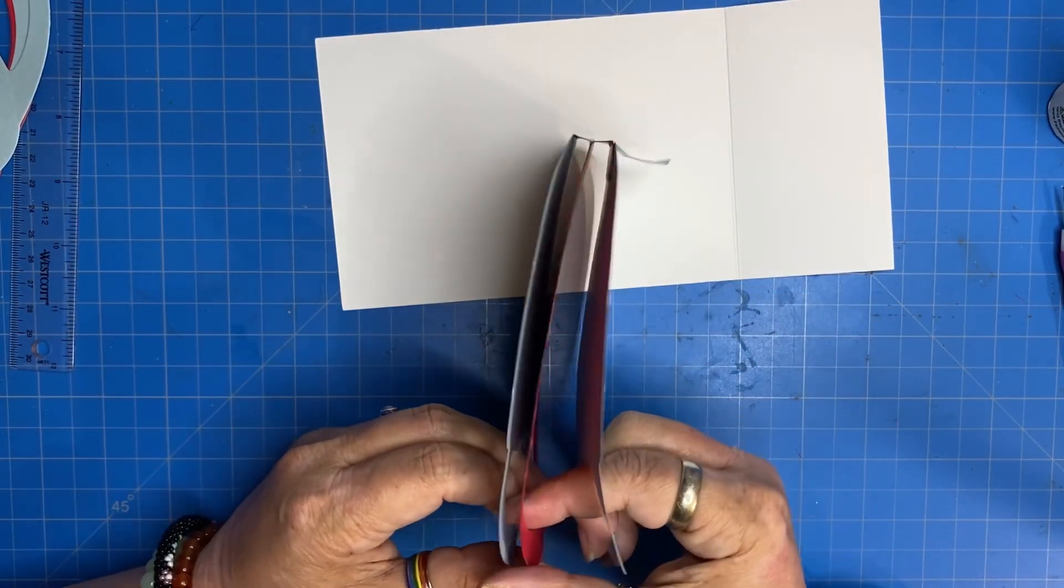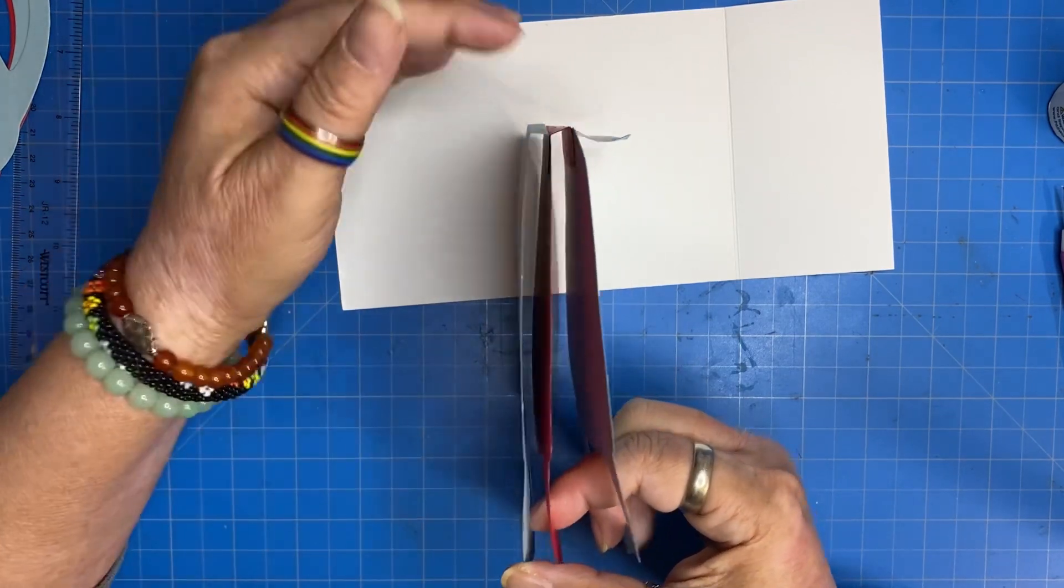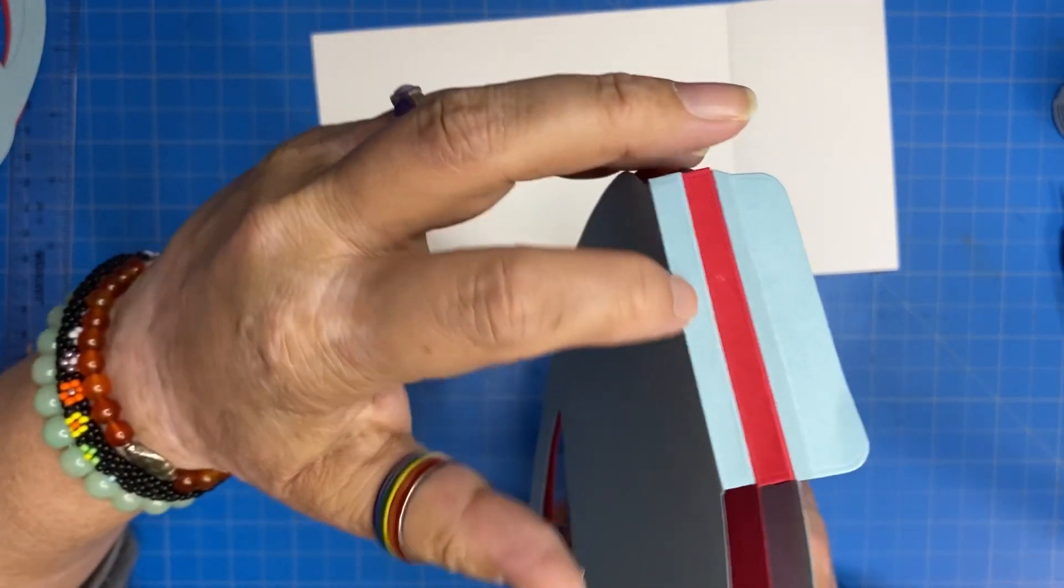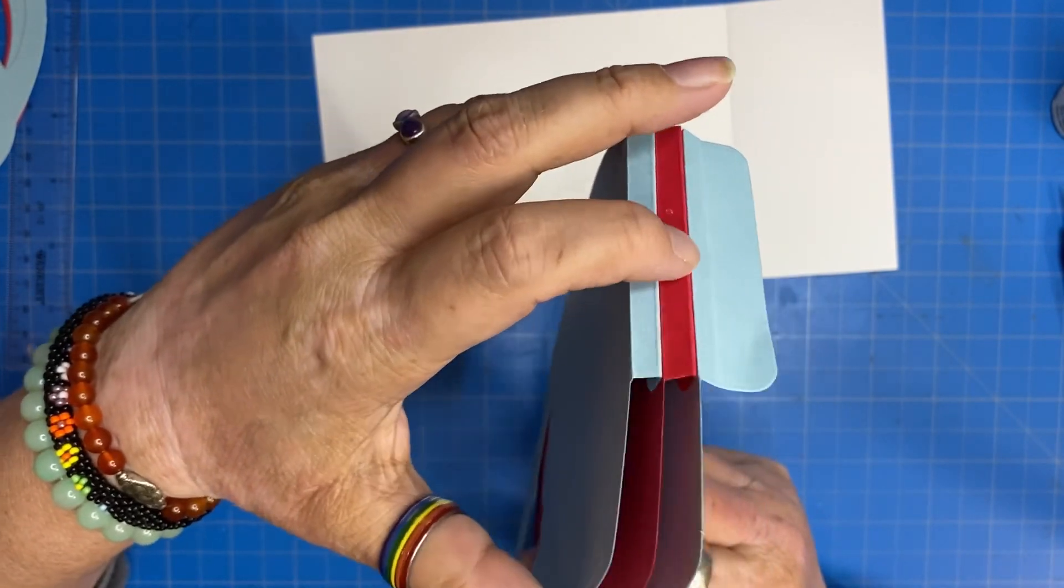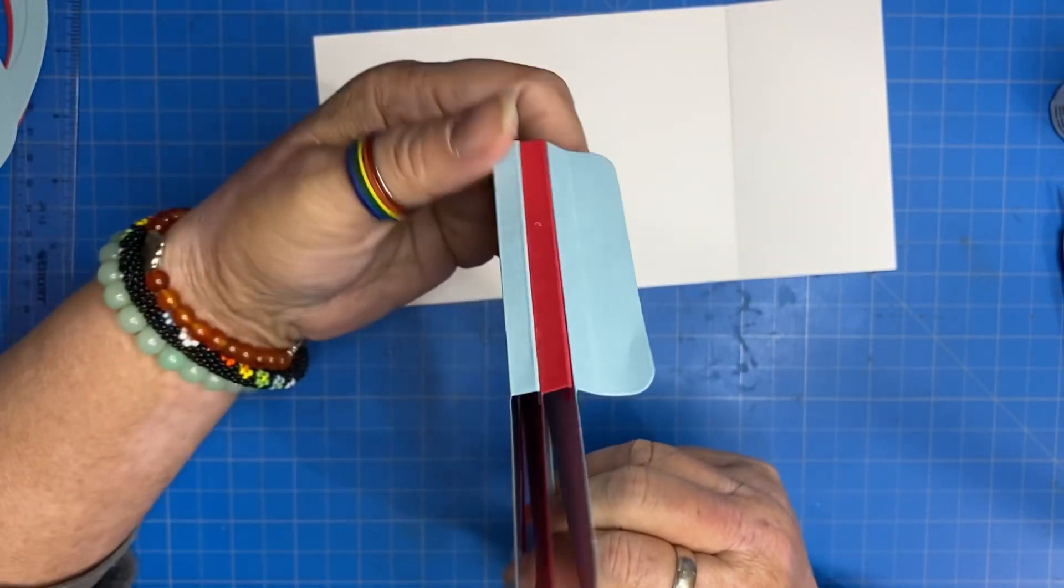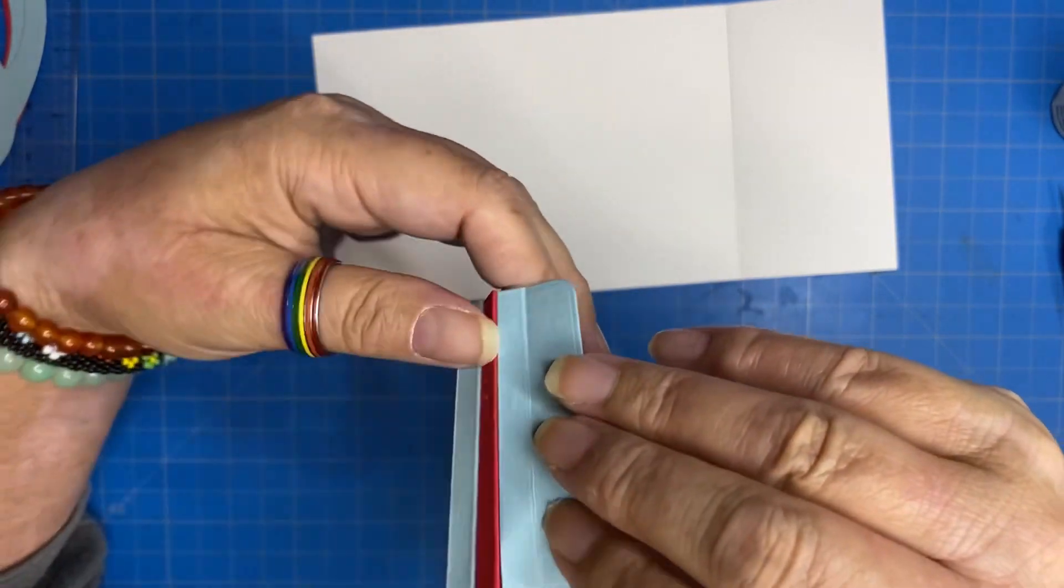So now we have our three gussets. The one from the front cover, the one from our first page, and now we're going to have another from our second page.